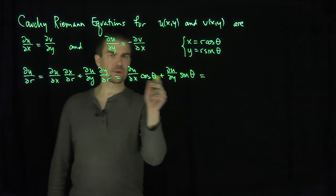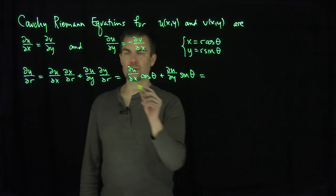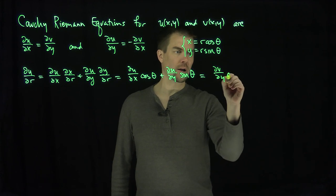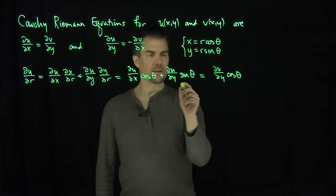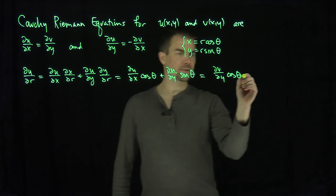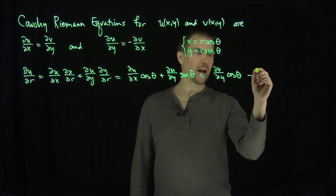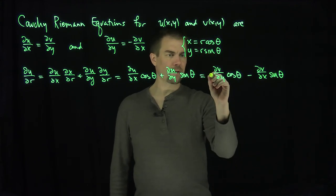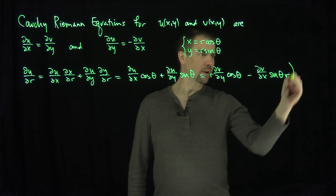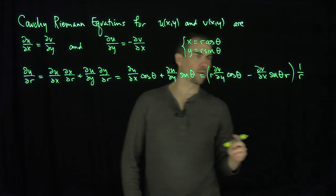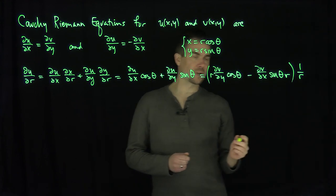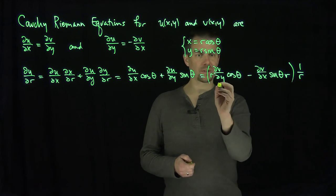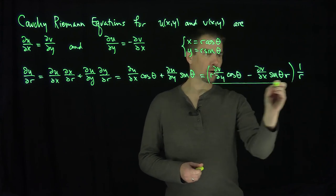Now I can relate ux and uy to the v's using Cauchy-Riemann. So ux equals vy, giving partial v partial y times cosine theta. And the second term becomes negative partial v partial x times sine theta. I'm going to put a factor of r into both of these terms and then multiply by 1 over r — that doesn't change anything. Now we can observe that this expression is exactly partial v partial theta.